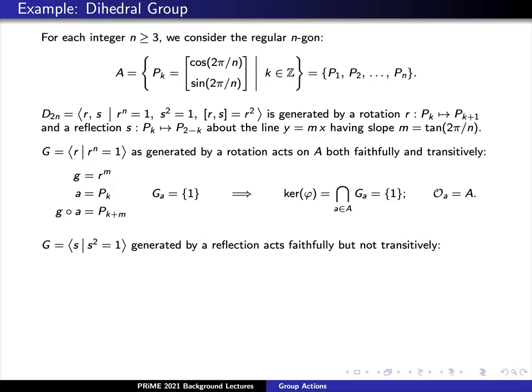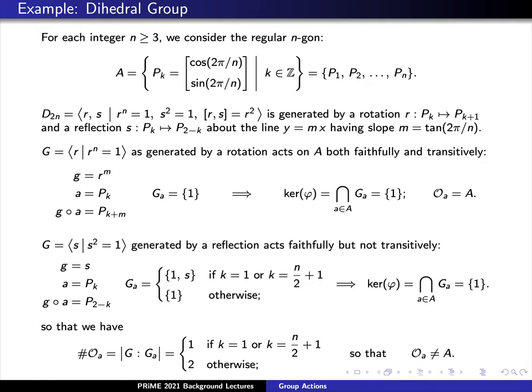Let's consider another subgroup — the subgroup generated by the reflections. Remember that S here is just a reflection about the line y equals mx. We claim that G acts faithfully on the set of vertices, but not transitively. Let's consider the non-trivial reflection, lowercase g, from our group capital G. That is, let's pick lowercase g as just equal to s.